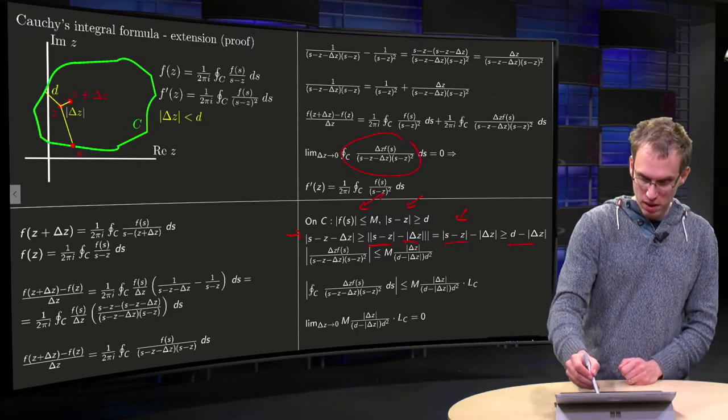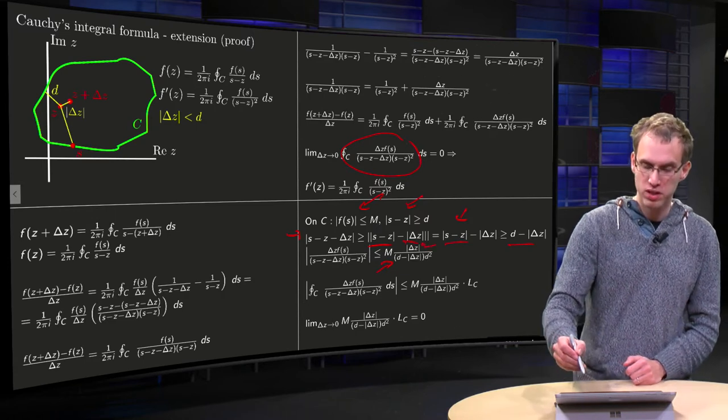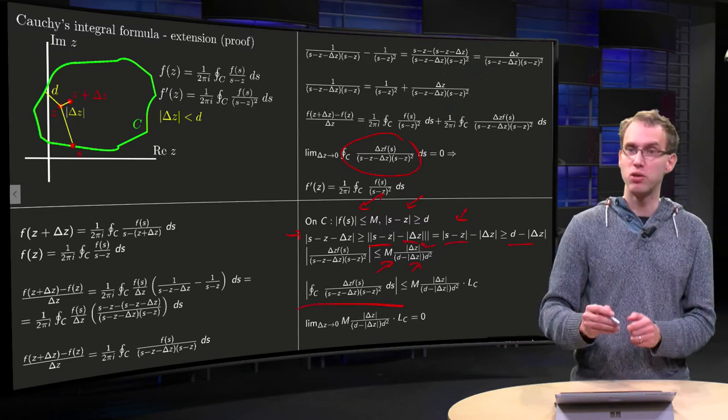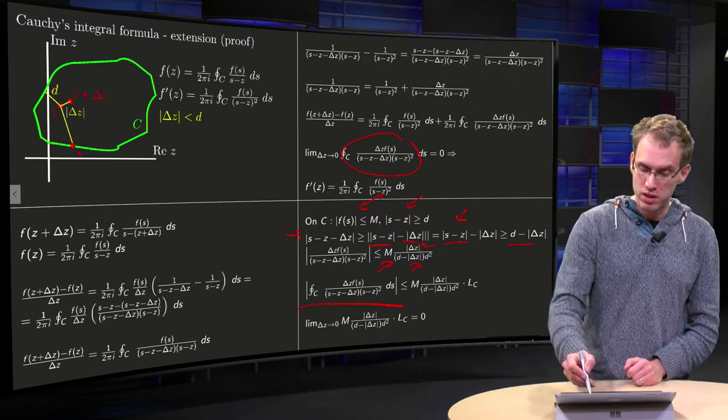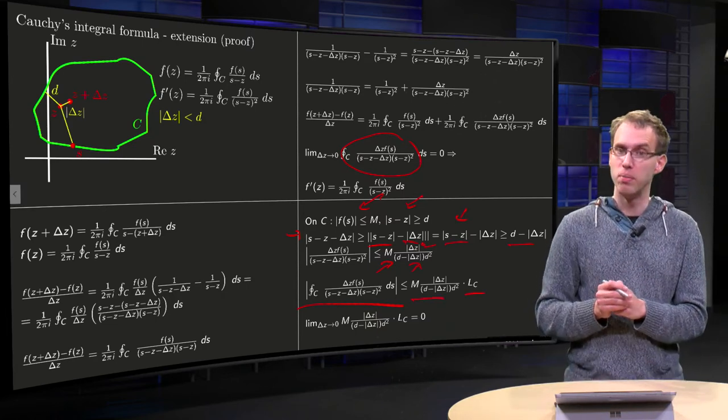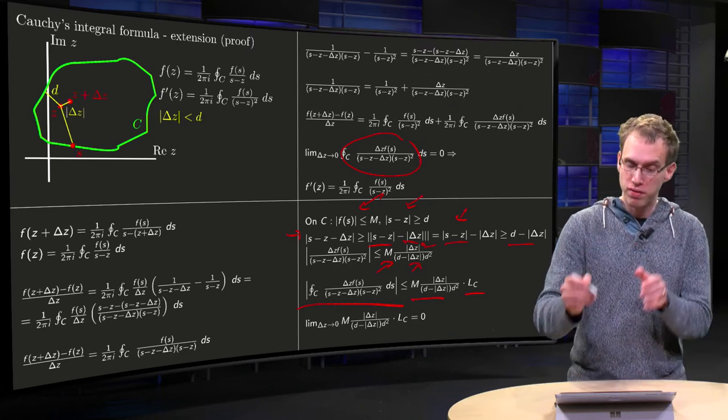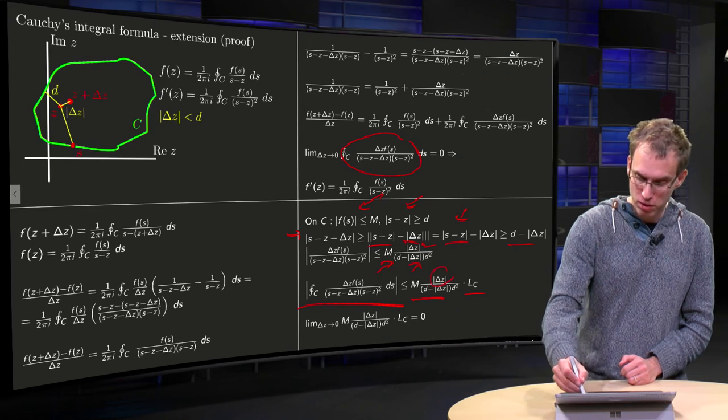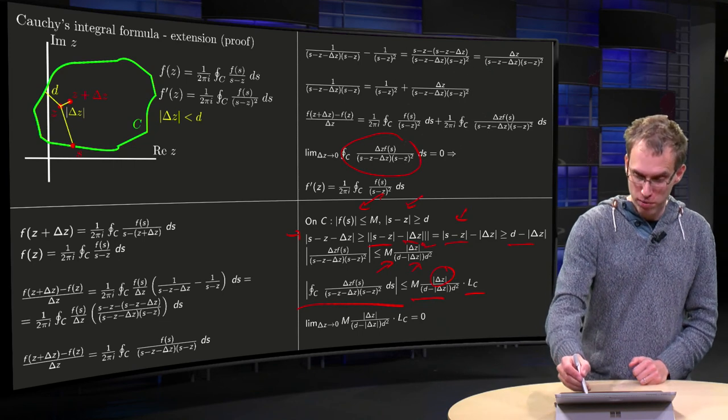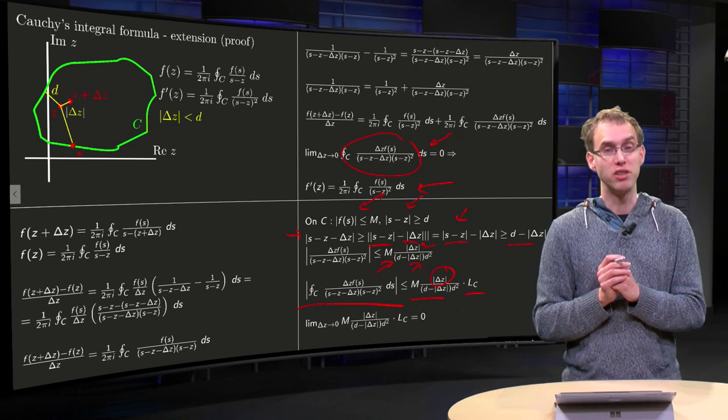The norm of delta z just remains, and we just estimate the numerator. Now the norm of integral is smaller or equal than this estimate times the length of the curve C, which is some finite number, and if you take your delta z to zero, your d is just a finite number, and you see the full term goes to zero due to the norm of delta z over here, which means we have proven this limit over there, and the extended version of Cauchy's integral formula.